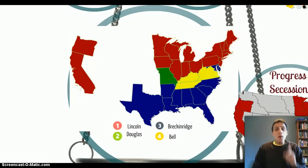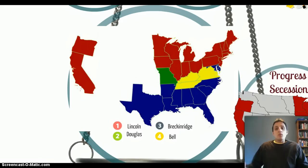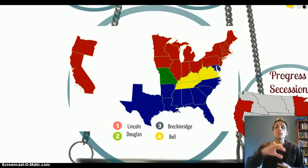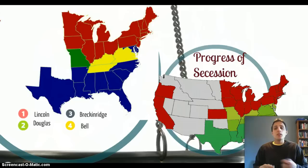Abraham Lincoln wins about 40% of the popular vote but wins the majority of the electoral votes, and that's how he's able to become president. In actuality, the person who comes in second in popular voting is Stephen Douglas, even though he doesn't win a lot of states. This result — the election of 1860 — is really the catalyst for secession from the Union.